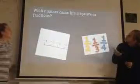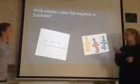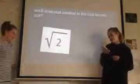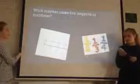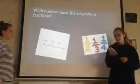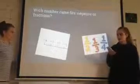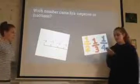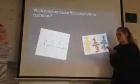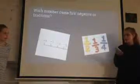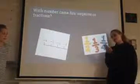Which number came first, negative or fractions? Fractions came first. The Egyptians used Egyptian fractions circa 1000 before Christ. Negative numbers appeared in China around 202 before Christ to 220 after Christ.